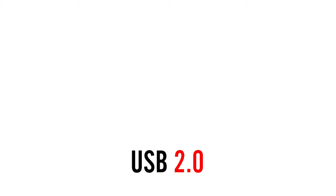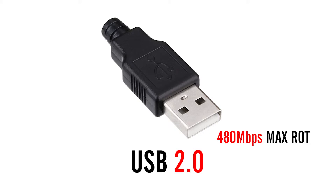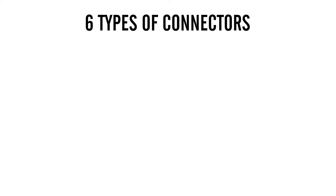The first and oldest one is USB 2.0, which we all know and love. It's still the most used one and the theoretical data transfer rate is 480 Mbps, which translates to about 60 MBps. In most day-to-day practice you can get around 40 to 45 MBps on average. Six different connectors are used with USB 2.0, divided into two main groups: Type A and Type B connectors.